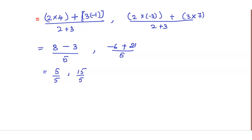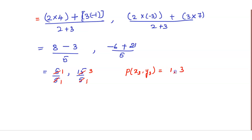We can cancel out: 5/5 = 1, and 15/5 = 3. So P(x3, y3) can be written as (1, 3). That's the answer. Thank you, friends.